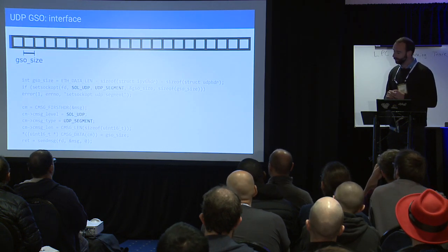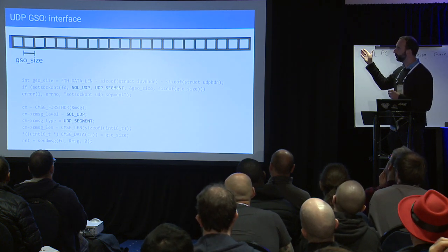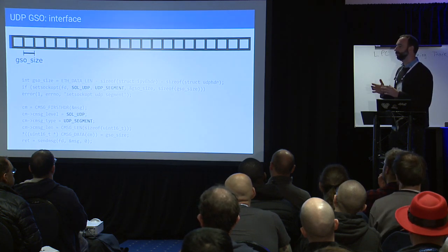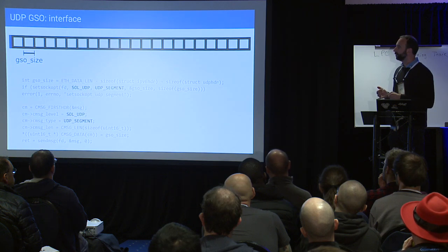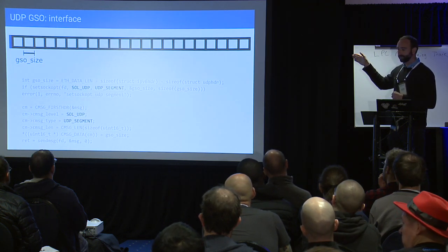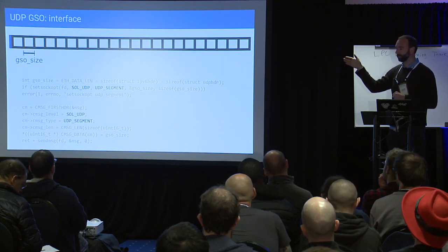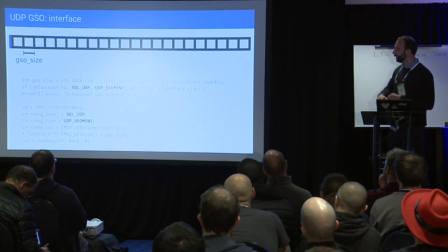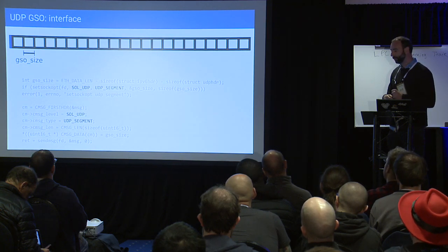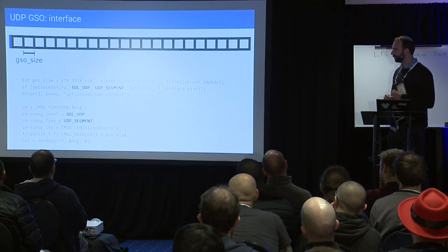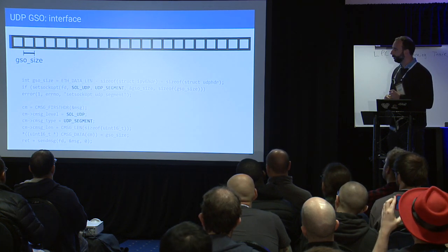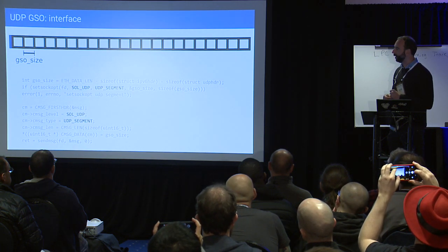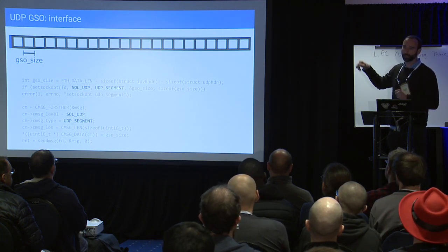How do you use this? All that's required is signaling to the kernel that you're aware this exceeds MSS and that the kernel should split it up at that segment size. There are two ways: either with setsockopt that remains associated with the socket, or with a control message at sendmsg time. The buffer does not need to be an exact multiple of GSO size — if it isn't, the last segment will be shorter than the others.